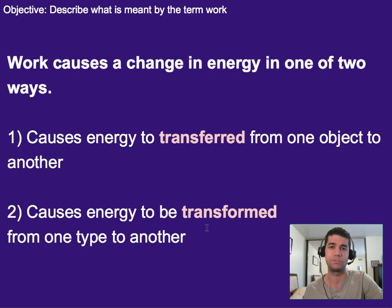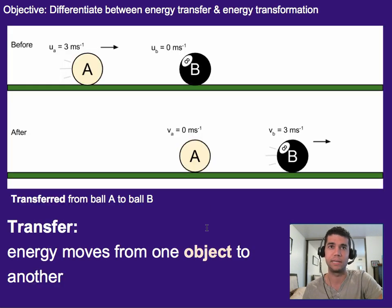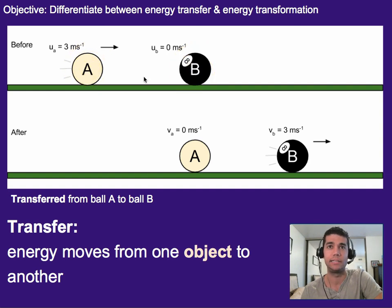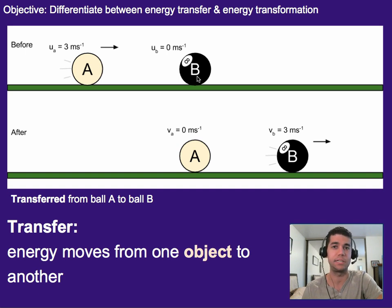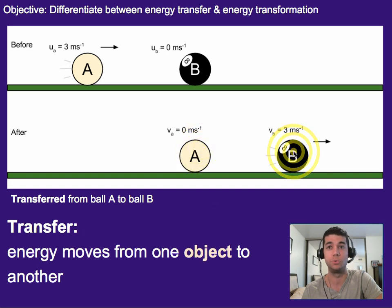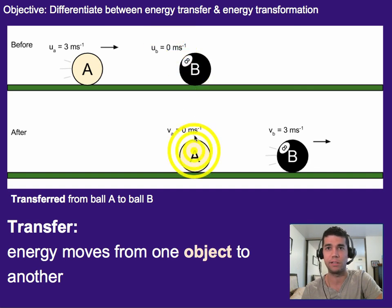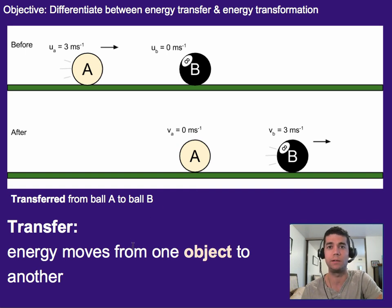Let's talk about what transfer and transformation mean, because we're going to expect you to use the correct one in the correct scenario. An example of work being done would be if ball A comes in and hits ball B — it's doing work on ball B by applying a force over a very short distance. This is a case where energy is being transferred from one object to another. Specifically, ball A comes in with kinetic energy, ball B has none, and after they collide the cue ball is no longer moving and has transferred all of its energy to ball B.